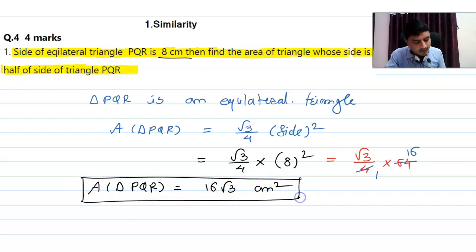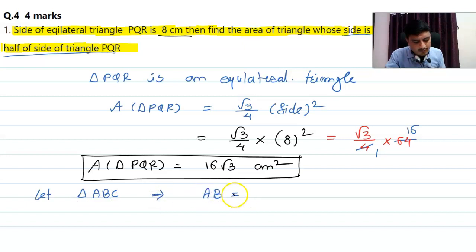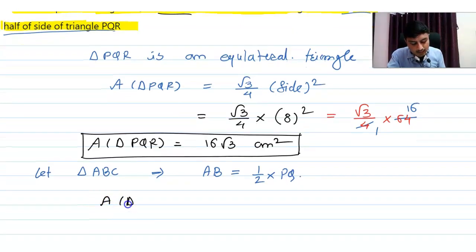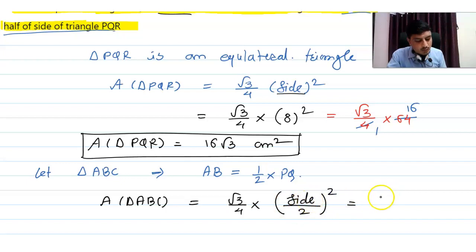Now we find the area of the other triangle ABC, whose side is half the side of triangle PQR. Area of triangle ABC = (√3 / 4) × (side / 2)² = (√3 / 4) × (side² / 4).